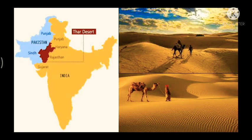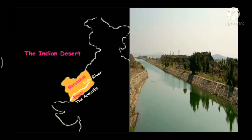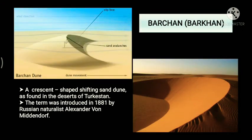Streams in this region appear during the rainy season and soon after disappear into the sand, as they do not have enough water to reach the sea. The Luni is the only large river in this region.